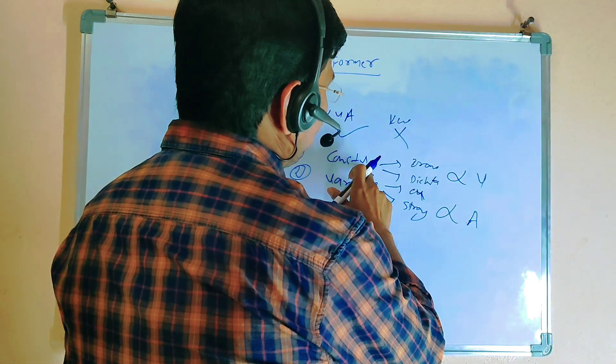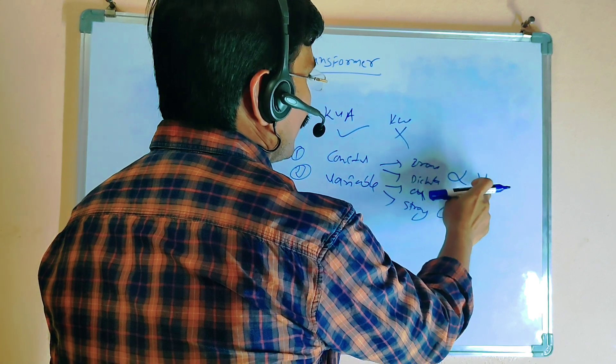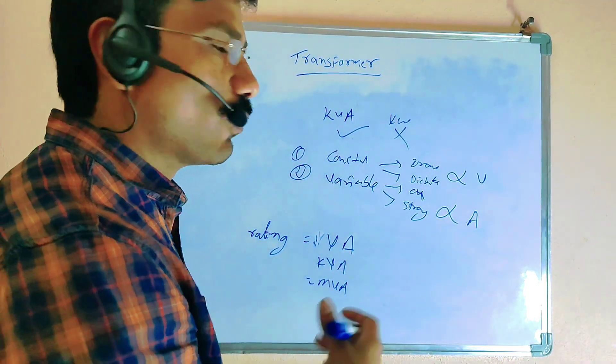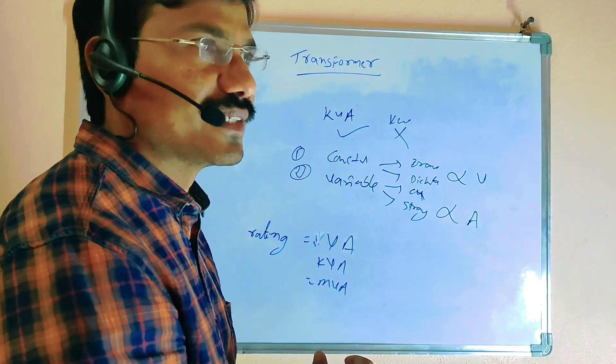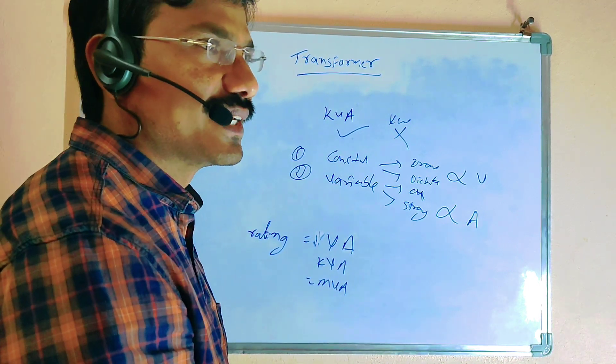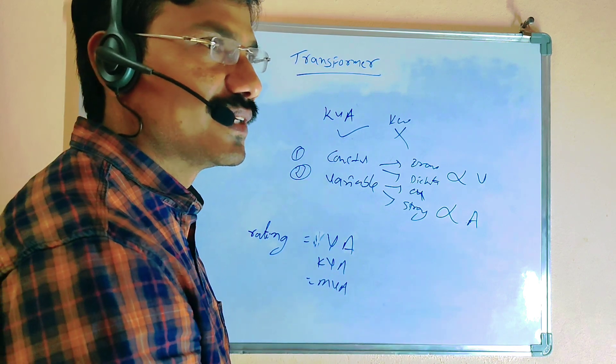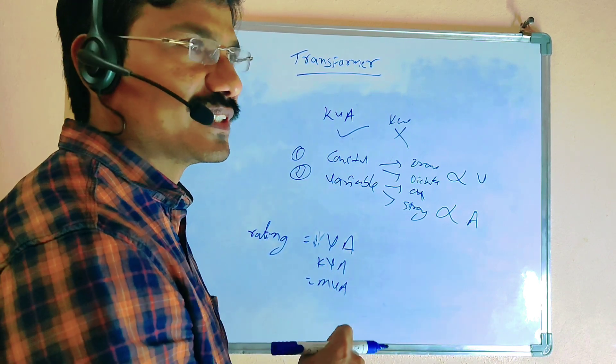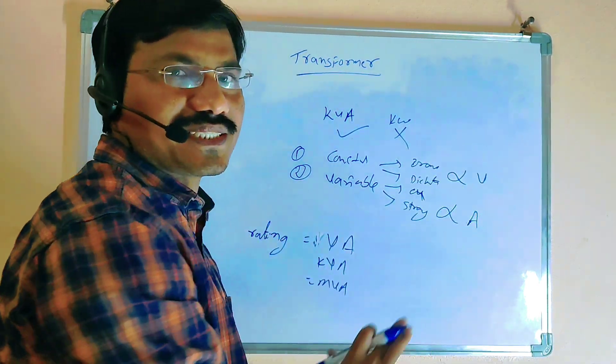The constant losses depend on voltage. Once the transformer is made, the voltage of the distribution transformer is constant. If the primary side is 33 KV and the secondary side is 450 volts, the voltage cannot change - it is fixed. These losses will also be fixed.